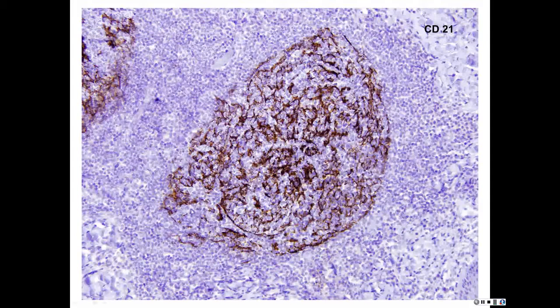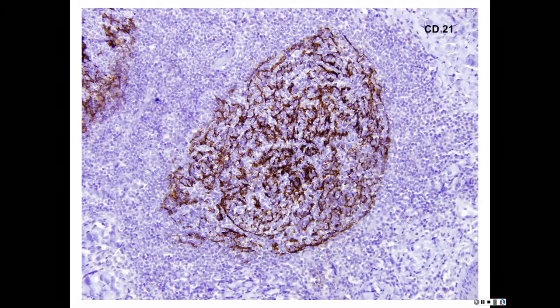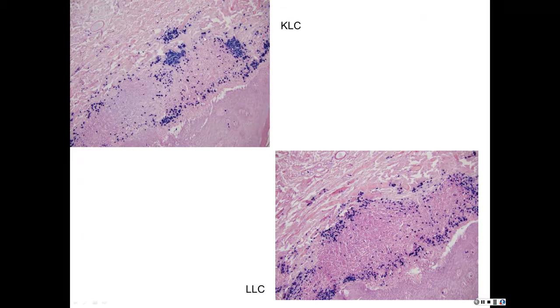CD21 and CD23 stain the dendritic network of the follicle — that's normal. In lymphoma, that dendritic network gets picked apart; there are big holes punched in that net. What you're looking at here is totally normal — that's what normal should look like. Kappa light chain — there are normally twice as many kappas as lambdas. Two-to-one ratio. That's normal.